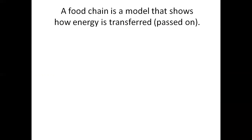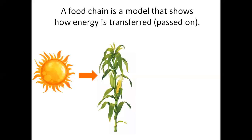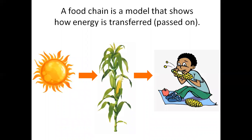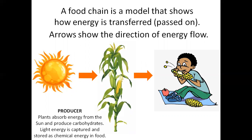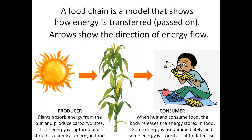A food chain is a model that shows how energy is transferred. Arrows show the direction of energy flow. The plant is the producer — plants absorb energy from the Sun and produce carbohydrates. Light energy is captured and stored as chemical energy in food. The person is the consumer. When humans consume food, the body releases the energy stored in food. Some energy is used immediately, and some energy is stored as fat for later use.